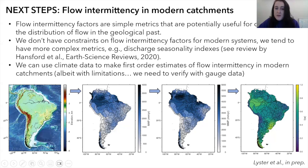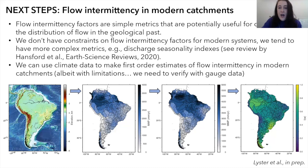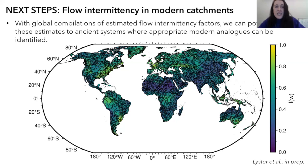It seems we can use climate data to make first-order estimates of flow intermittency. I'm currently in the process of verifying these constraints with publicly available gauge data to see how effective using climate data is. With this we can produce global compilations — so if you're studying the geological past and have good understanding of the tectonic regime, climatic regime, and land cover, there's potential to find an appropriate modern analog and look at its flow intermittency factor.